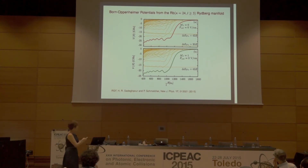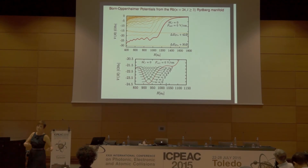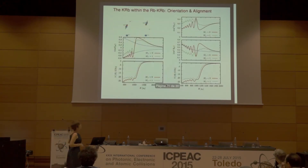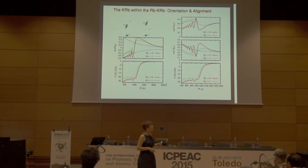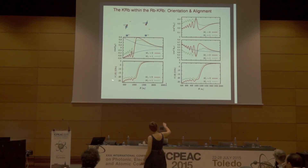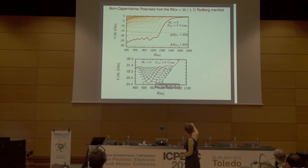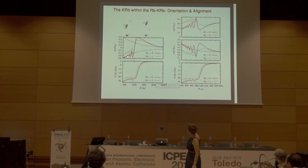Now, KRb within the triatomic molecule is experiencing all this electric field. This is the effect on the motion — this is orientation — measuring the cosine of theta as a function of the internuclear separation, compared with the energy. In this region, for the two lowest states coming from the degenerate manifold, we see strong oscillations. The molecule is negatively oriented — this is the example where I have rubidium-plus here and KRb with its dipole moment pointed towards rubidium-plus, with the electron somewhere there.